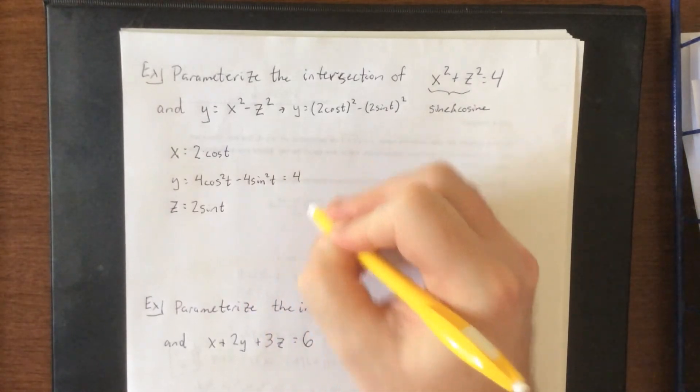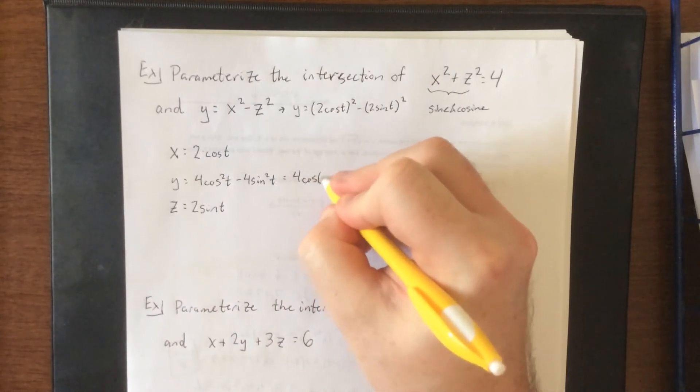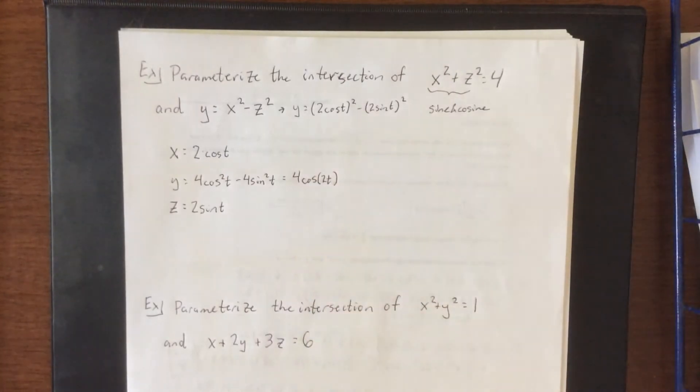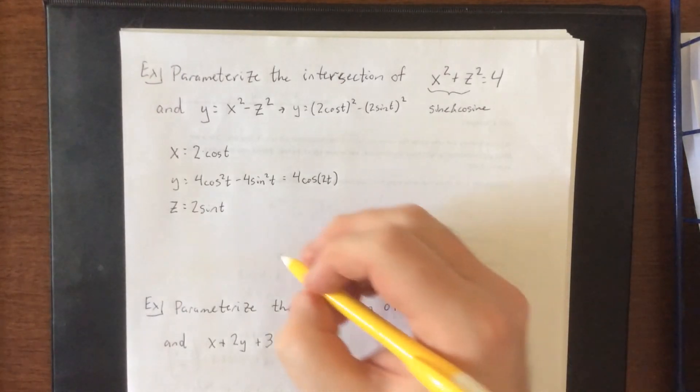Now it's not necessary to do so, but if you do factor out a four, there is a double angle identity that you can use with this. Again, that part is completely optional. You don't have to use it. I just think it looks a little bit cleaner when you express it in that form.